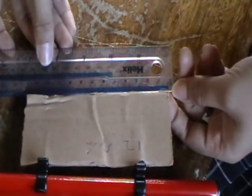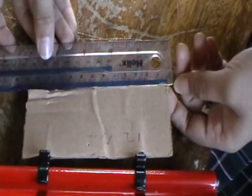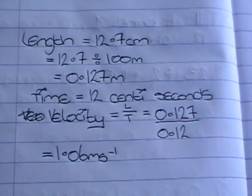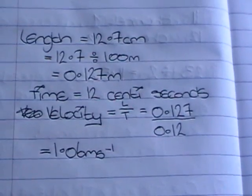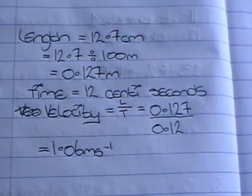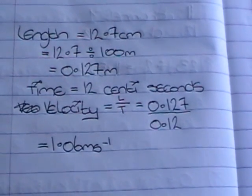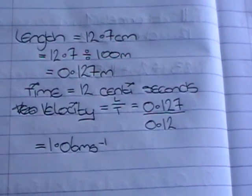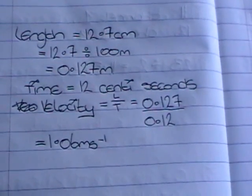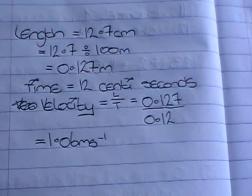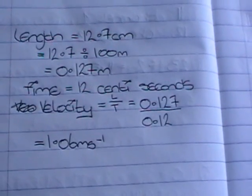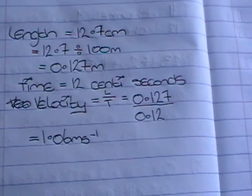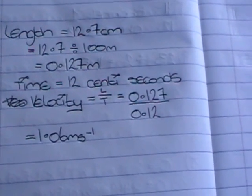The length of the card is twelve point seven centimetres. Divide by one hundred to get 0.127 metres. The time to go through one of the gates was twelve centiseconds, which is 0.12 seconds. Dividing the length by the time gives the velocity: 1.06 metres per second.